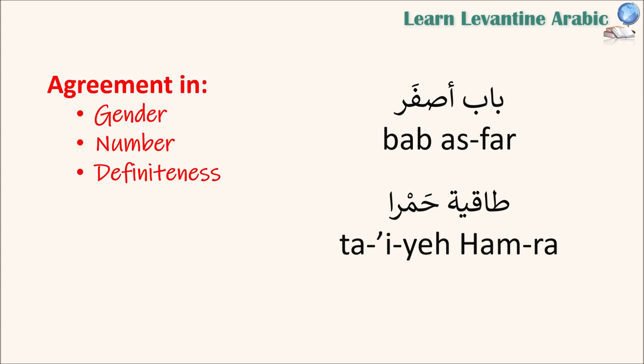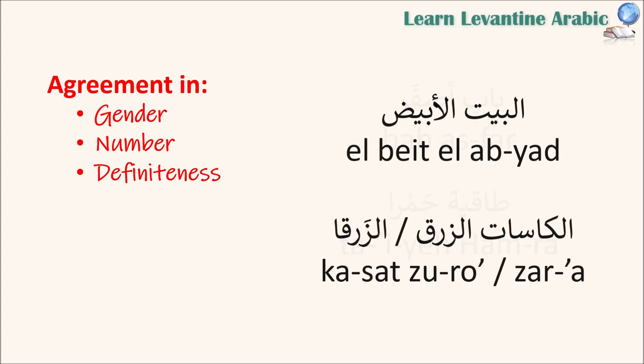With القبعة الحمراء, we have agreement in gender — both are feminine. القبعة is feminine, you can see the تاء مربوطة at the end, and حمراء is feminine — the masculine form is أحمر. Both are singular in number, and both the noun and adjective are indefinite without التعريف, giving us an indefinite phrase.